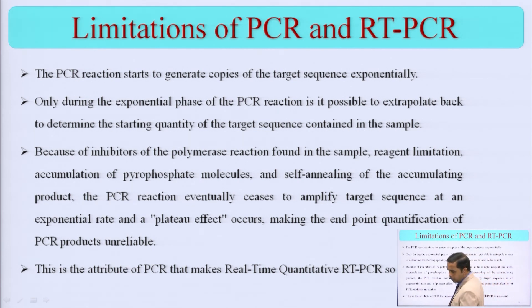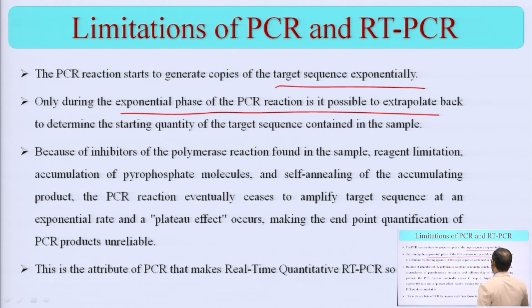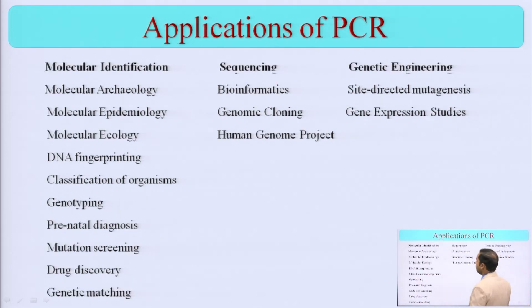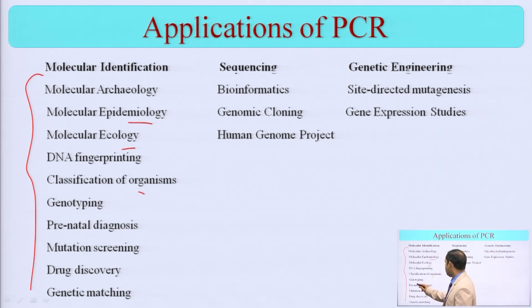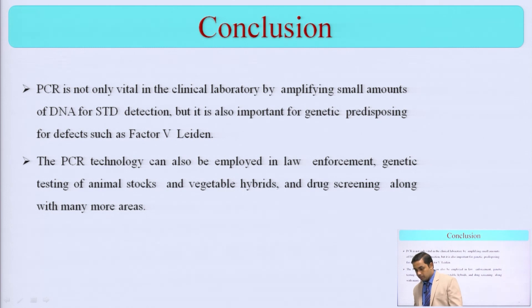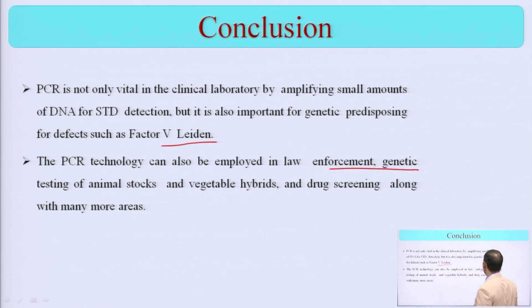There are some limitations: PCR reactions generate copies of target sequence exponentially, but only during the exponential phase of the PCR reaction is it possible to give results. Because inhibitors of polymerase reactions are sometimes found in the sample, reagent limitations may happen. You can use this technology in molecular archaeology, molecular identification, epidemiology, ecology, genotyping, drug discovery, bioinformatics, genome cloning, and site-directed mutagenesis. It is vital in clinical laboratory work, and also important for identifying genetic predispositions for defects such as Factor V Leiden.